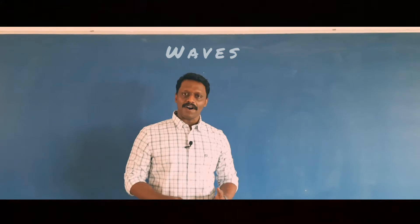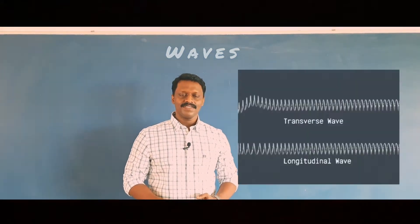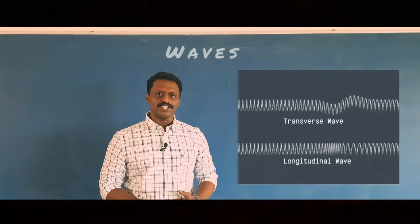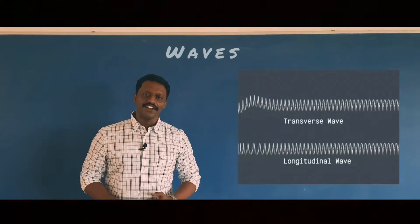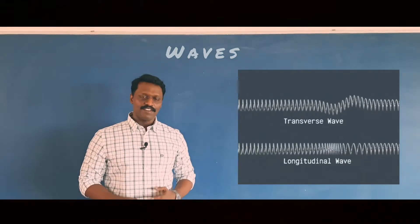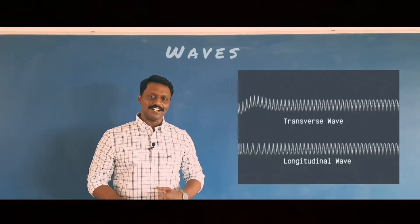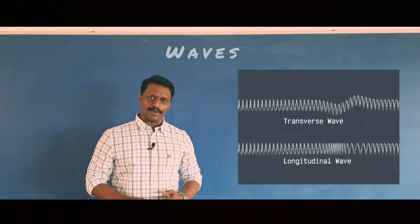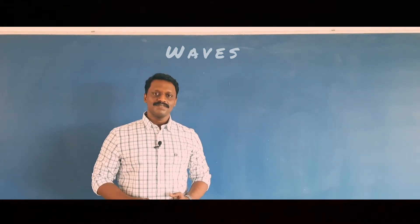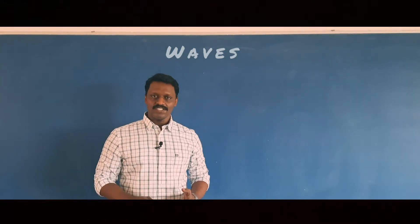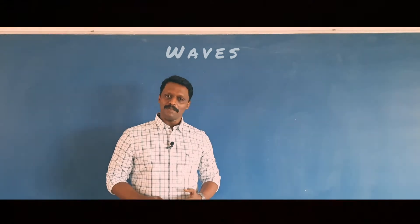Based on the vibration of particles of the medium, waves are classified as transverse and longitudinal. In transverse wave propagation, the particles of the medium vibrate in a direction perpendicular to the direction of wave propagation. In longitudinal waves, the particles vibrate parallel to the direction of wave propagation. Transverse waves consist of crests and troughs, whereas longitudinal waves consist of compressions and rarefactions. Only transverse waves can be polarized.